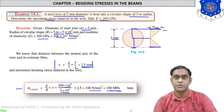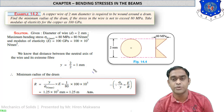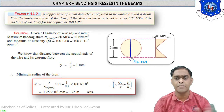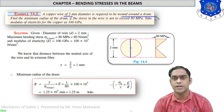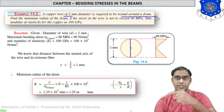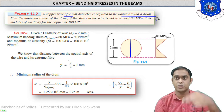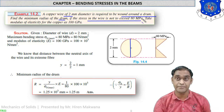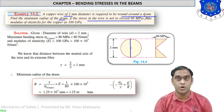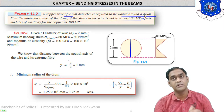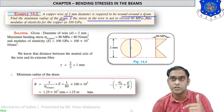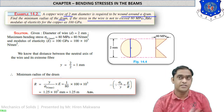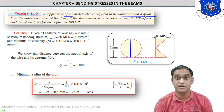Example 14.2: A copper wire of 2 mm diameter is to be wound around a drum. Find the minimum radius of the drum if the stress in the wire is not to exceed 80 MPa. Note: in the previous numerical the radius was given and stress was unknown; here the stress is given and we must find the radius of the drum.